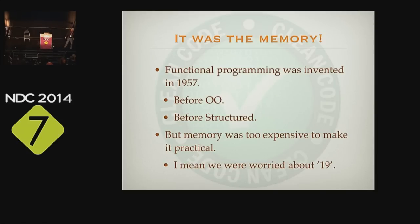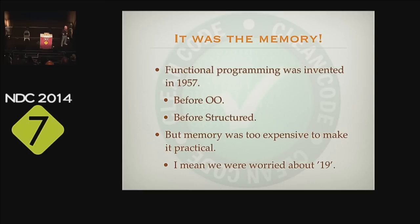Functional programming was invented in 1957 — before OO, before structured programming, before Dijkstra had written his paper about go-to being considered harmful. And yet in 1957 we were already doing functional programming. Functional programming was the first of the three major paradigms to be invented — the last to be adopted, oddly. And why? Because memory was too expensive to make it practical.